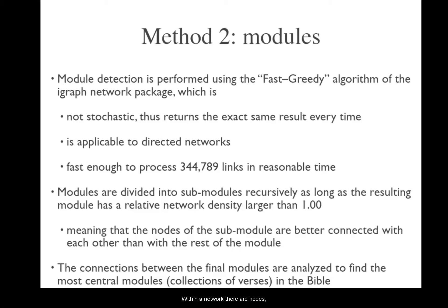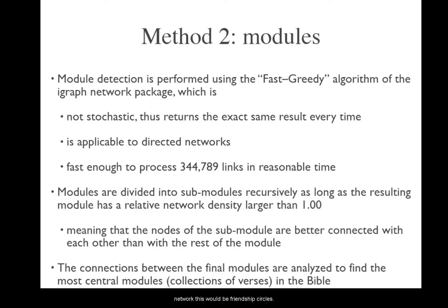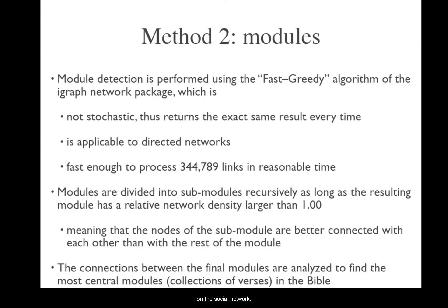In a network there are nodes — individuals on a social network — who are more closely connected to each other than they are connected to the rest of the network. On a social network, this would be friendship circles, where friends spend more time with each other than with other people on the social network.